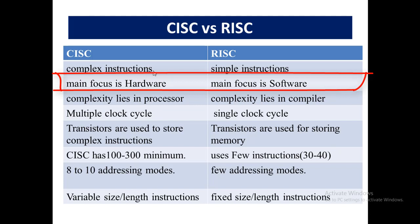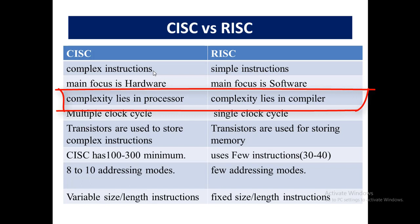The third point: complexity lies in the processor for CISC. Since CISC mainly deals with hardware, its complexity lies in the microprocessor because it has to write complex instructions and operations there, which is the reason processor speed and performance reduces. While on the other hand, RISC's complexity lies in the compiler.